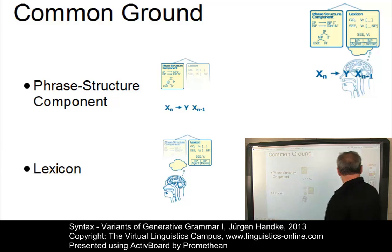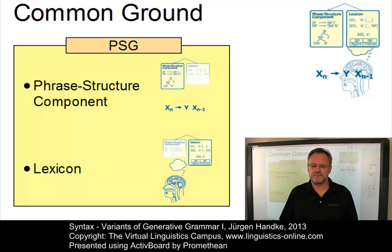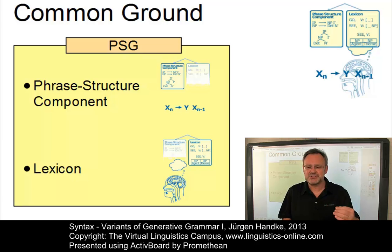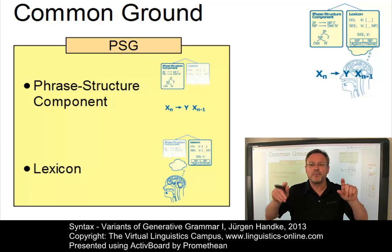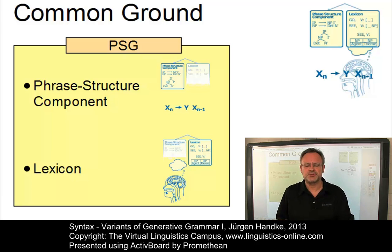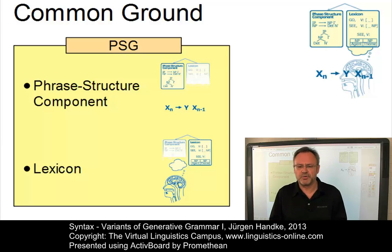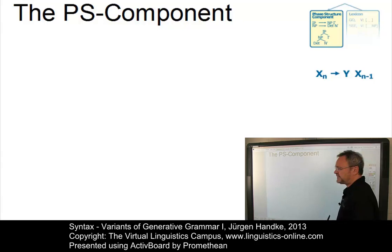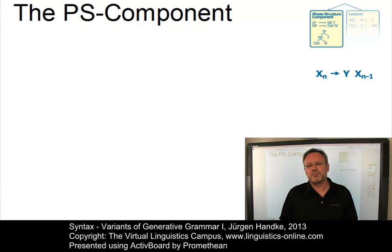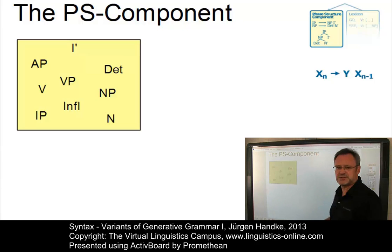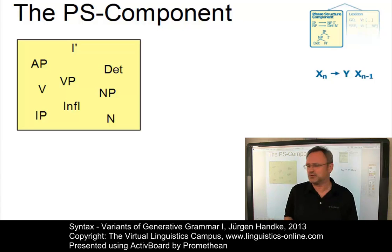Such a model is referred to as a phrase structure grammar. Within more complex models of grammar, the PSG – the phrase structure grammar – functions as the basic component or base. Thus, a phrase structure grammar of whatever type constitutes the core of any generative grammar. Let us look at its components in more detail. The phrase structure component of a phrase structure grammar consists of a set of symbols, that is, the syntactic categories.